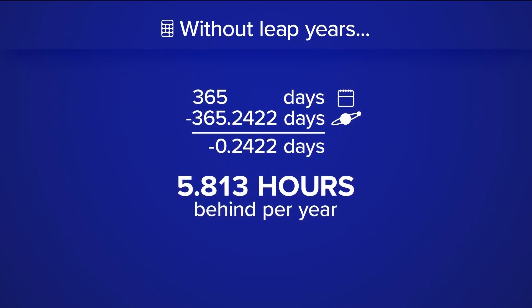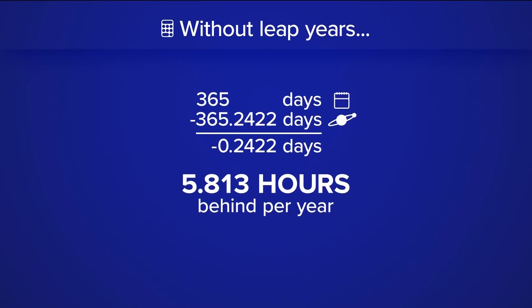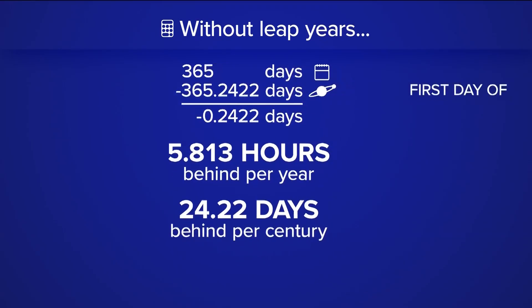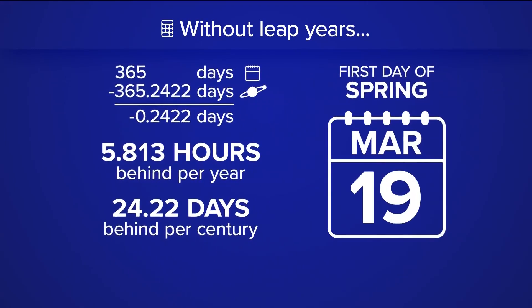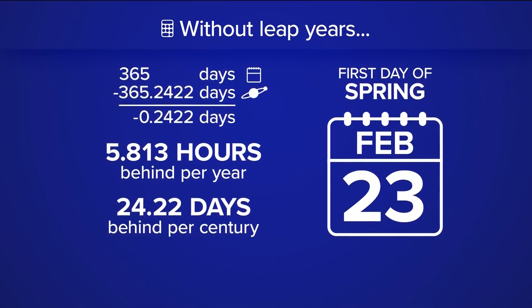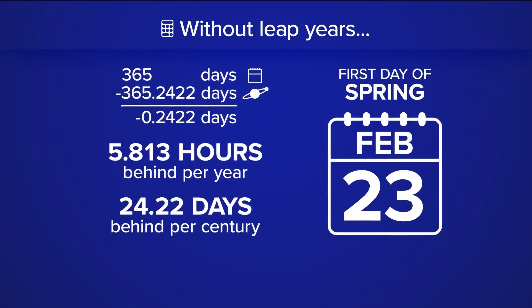While this is a small number, over decades and centuries this would have an impact on our calendar. In 100 years, our calendars would be off by 24 days. So, for example, instead of the first day of spring being on March 19th, without a leap year it would be on February 23rd, and so on and so forth.